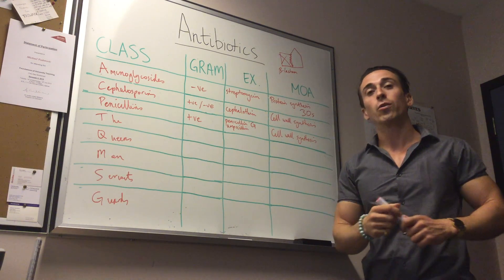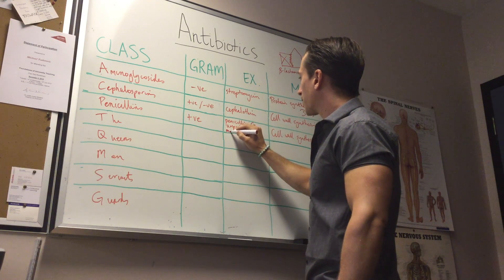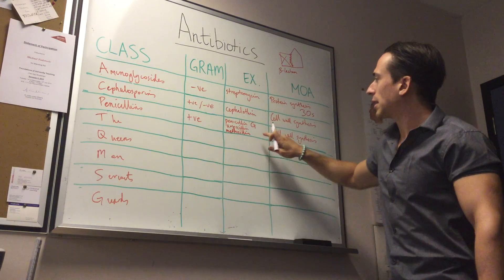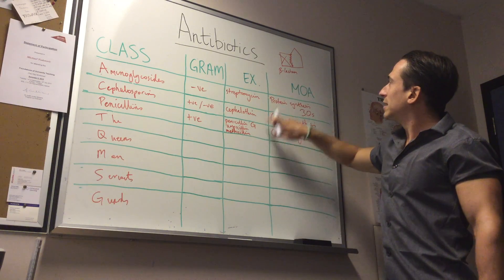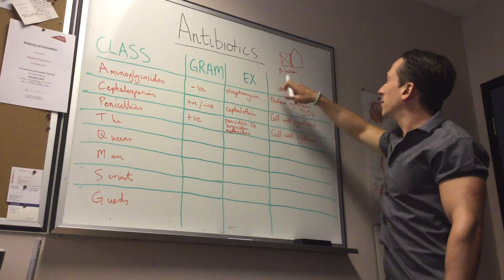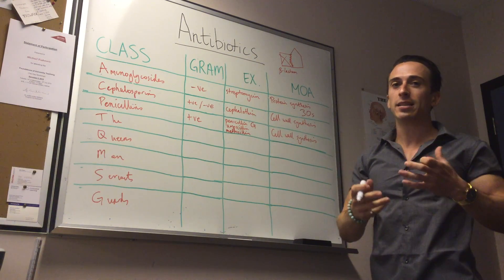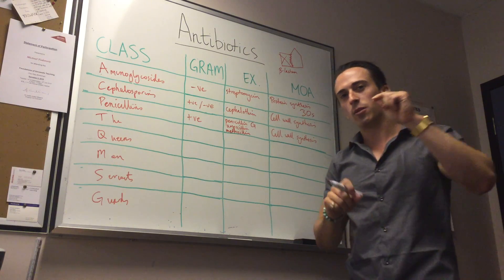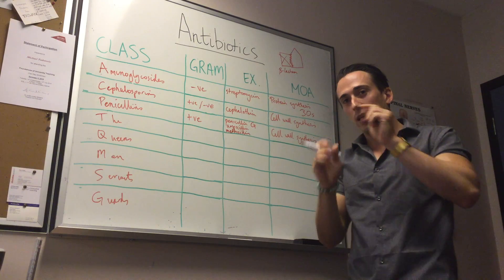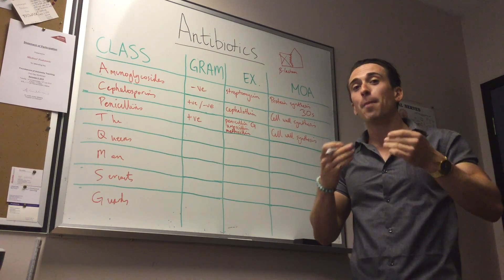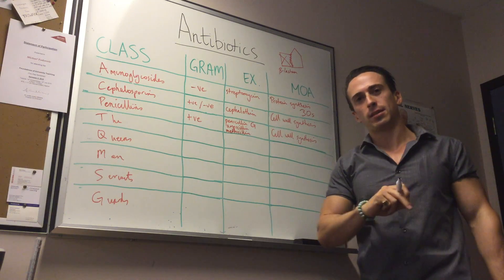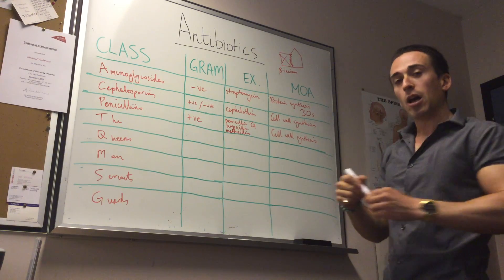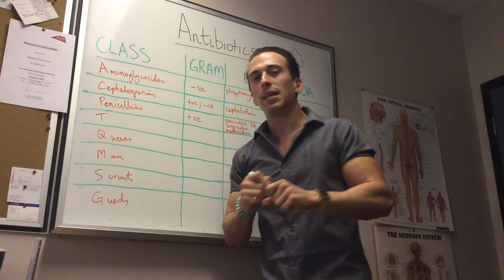To overcome this resistance, scientists developed methicillin. Methicillin was highly effective because it is resistant to both beta-lactamase and penicillinase. However, you may have heard of MRSA — methicillin-resistant Staphylococcus aureus — where bacteria have developed resistance even to methicillin. This highlights how readily bacteria can become resistant to antibiotics.